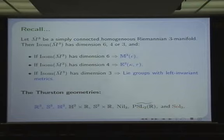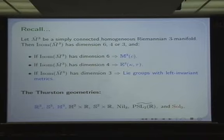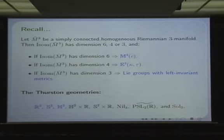In any case, all of them are Lie groups having left-invariant metrics. This is related to the Thurston three-dimensional geometries. The Thurston three-dimensional geometries are homogeneous structures modeled on simply connected Riemannian three-manifolds satisfying two properties: they admit compact quotients, and their isometry group is maximal. Under these conditions, you have an exact classification of eight different Thurston geometries.